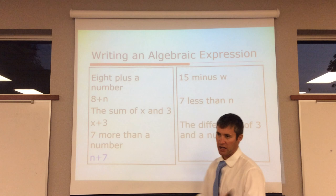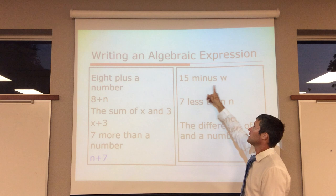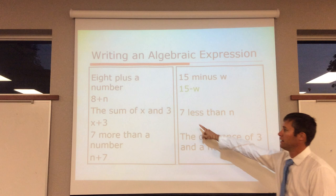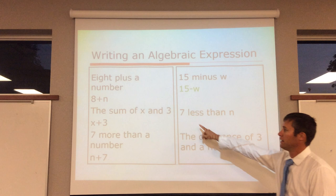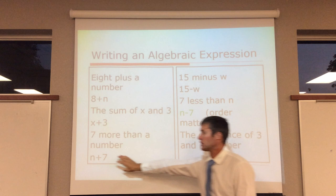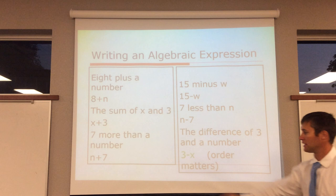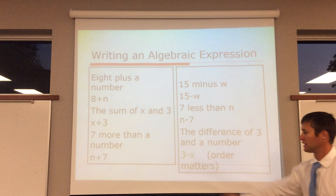Your variables could be x, you could use m, j, they could be a smiley face, but we're going to use a variable for it. So 15 minus w: we go 15 minus w. Here, 7 less than n. Less than means subtraction. So we're 7 less than n. And this matters: n minus 7. There's 7 less than what we had. In addition, the order doesn't matter. In subtraction, the order will matter. Then, lastly, the difference of 3 and a number. The difference: subtraction. Again, order matters.